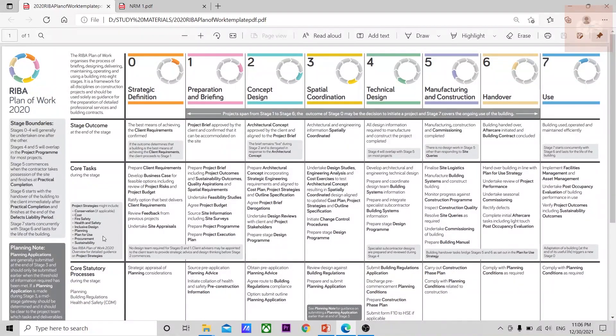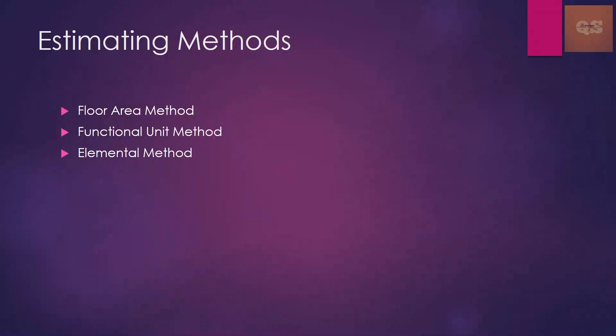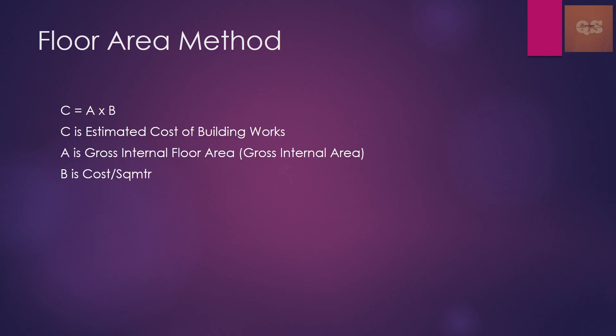Now, for preparation of a cost plan when we don't have much information, there are a few estimating methods used to get the cost of the project. The three main estimation methods are: the Floor Area Method, the Functional Unit Method, and the Elemental Method. Let's look into each one.